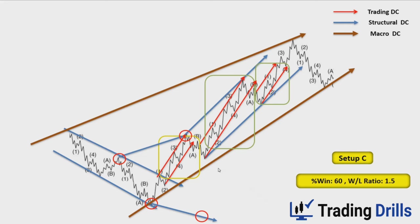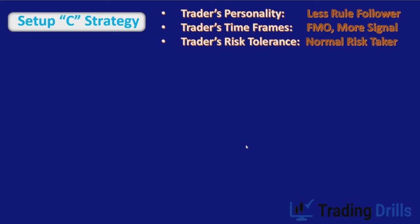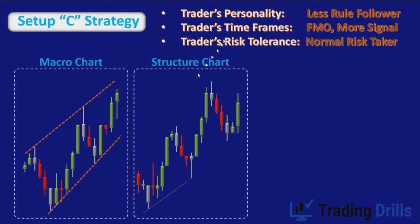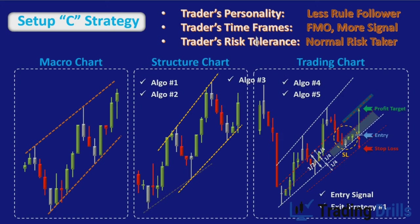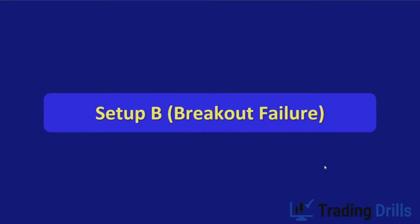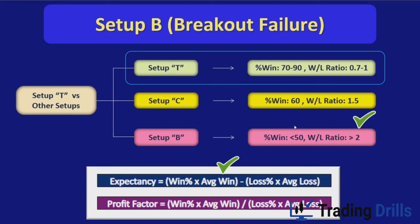This sideways pattern happens more frequently, and if adapted to a Setup C strategy, it is suitable for traders who are less rule-following, less patient, and have a fear of missing out on the first wave of a trend — in other words, higher risk tolerance individuals. Setup B stands for breakout failure. This setup has a much lower win rate, less than 50%, so its edge comes entirely from a high win-to-loss ratio.